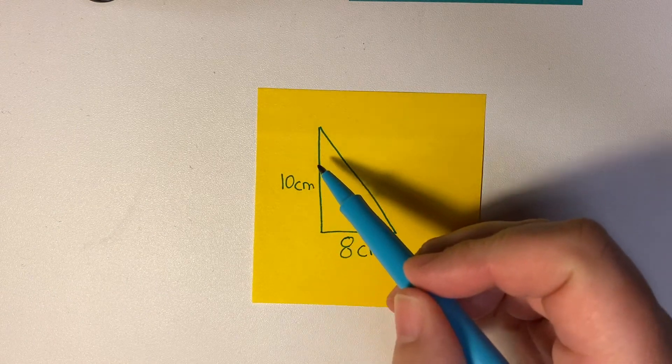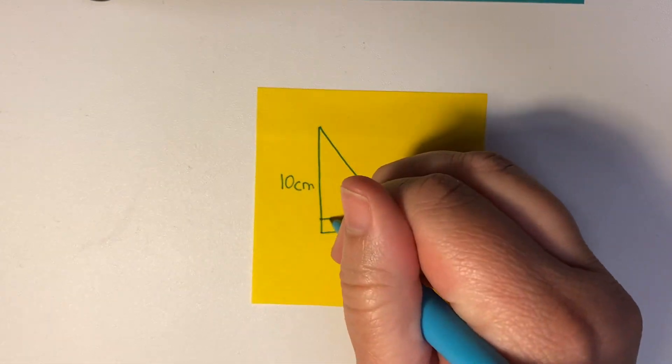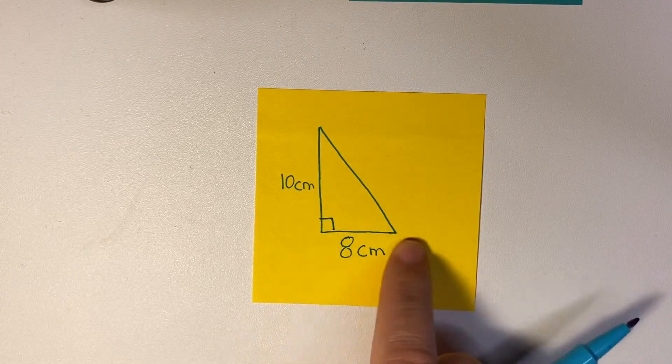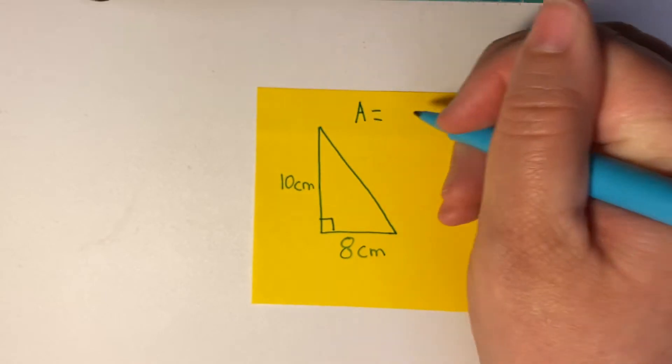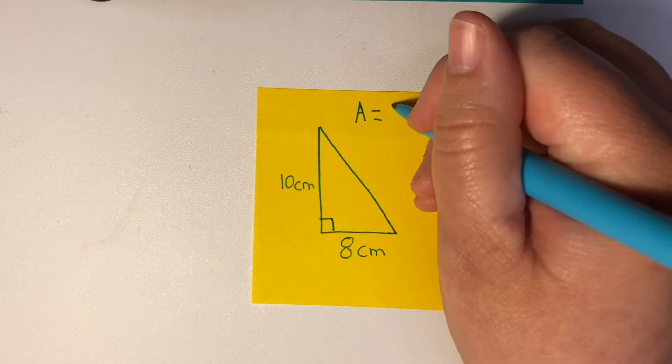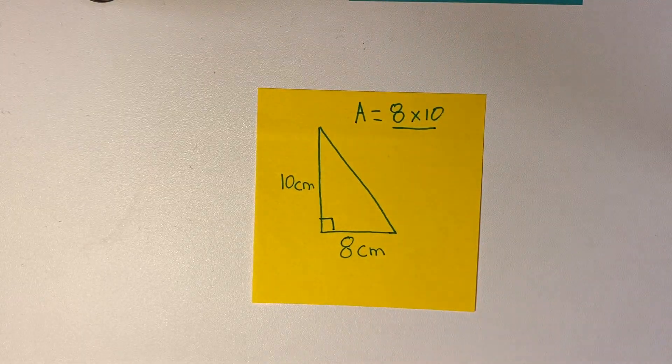Okay, so let's look at an example. So our height is 10, that's how high it is, and we're also going to say this is a right triangle, and our base is 8. So we're going to do area equals base times height divided by 2.